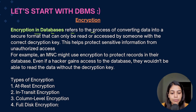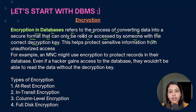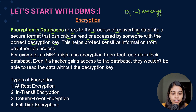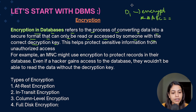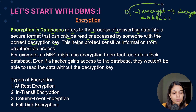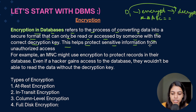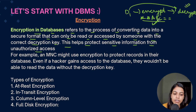Encryption in databases refers to converting data into a secure format that can only be read by someone with the correct decryption key. If there is data D1 in our system, we encrypt it into a secure format — a mixture of special characters, alphabets, and symbols. Only the person with the correct decryption key can decrypt and read the original data D1.